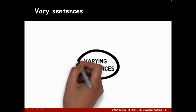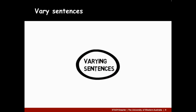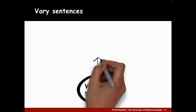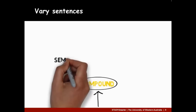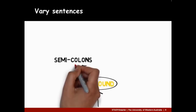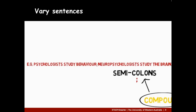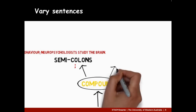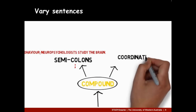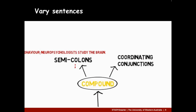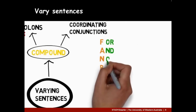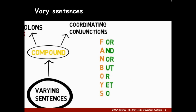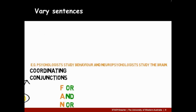We can vary our sentences in a number of ways. We can, for example, create compound sentences that contain two or more independent clauses. We can join these clauses with semicolons, where we would normally use a full stop, especially to join clauses that are similar in structure and closely linked in ideas. Or we can join clauses using coordinating conjunctions. You can think of coordinating conjunctions as FANBOYS, using the first letter of these words to remind you what they are. Here's an example of a sentence joined by coordinating conjunctions.